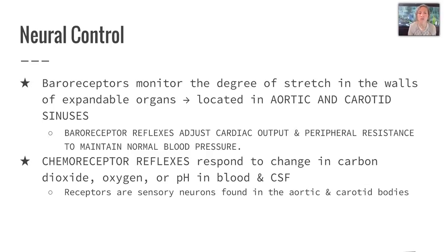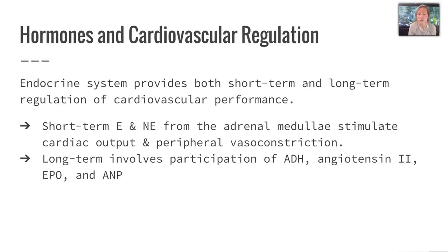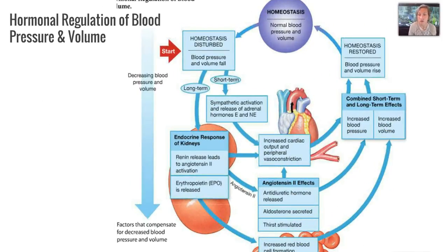Neural control includes baroreceptors, which monitor the degree of stretch in the walls of expandable organs. They're located in the aortic and carotid sinuses. The reflexes adjust cardiac output and peripheral resistance to maintain normal blood pressure. Chemoreceptor reflexes respond to changes in carbon dioxide, oxygen, or pH, and their receptors are sensory neurons found in the aortic and carotid bodies. Hormones involved in cardiovascular regulation provide both short and long-term responses. Short-term puts epinephrine and norepinephrine into play to stimulate cardiac output and peripheral vasoconstriction, while long-term involves ADH, angiotensin II, erythropoietin, and ANP, shown in the next two diagrams.